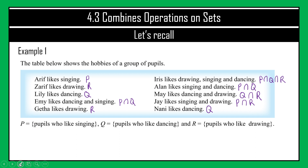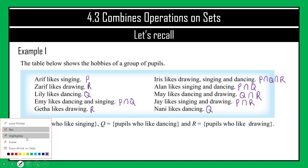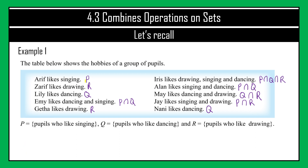Now I'm going to list the pupils for set P, set Q, and set R. For set P, I look for those with the label P. That gives us Arif, Amy, Iris, Alan, and Jay — 5 pupils belonging to set P.